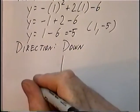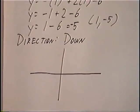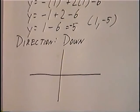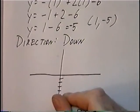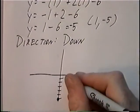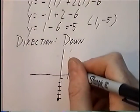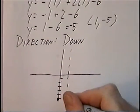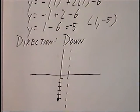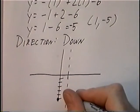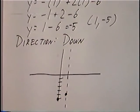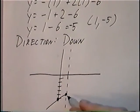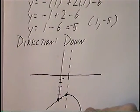Graphing from here: we draw the y-intercept at -6, the axis of symmetry at x = 1, and the vertex at (1, -5). The direction goes down, so we draw the quadratic equation going through the vertex and through the y-intercept, opening downward.